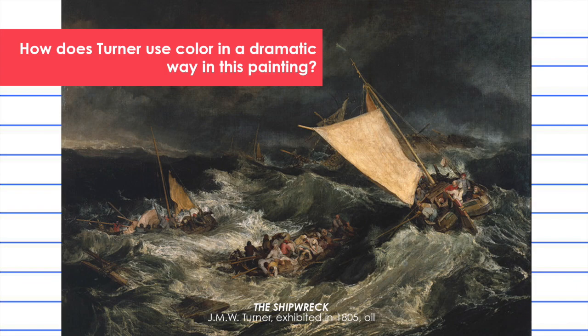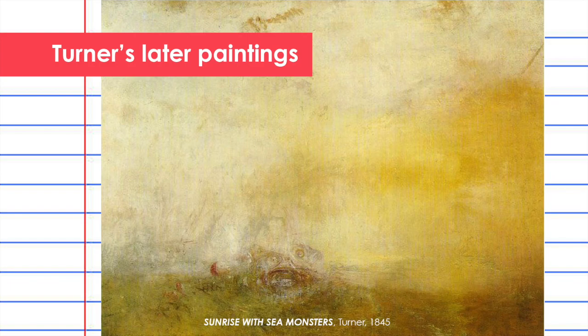This piece by Turner is called The Shipwreck, painted in oils and exhibited in 1805. Shipwrecks and natural disasters at sea were a recurring theme in Romantic painting. How does Turner use color in a dramatic way? The dark tones of the sea contrast the white crest of the waves, literally painting a picture of a dramatic sea where one can imagine the movement and excitement of what is taking place.